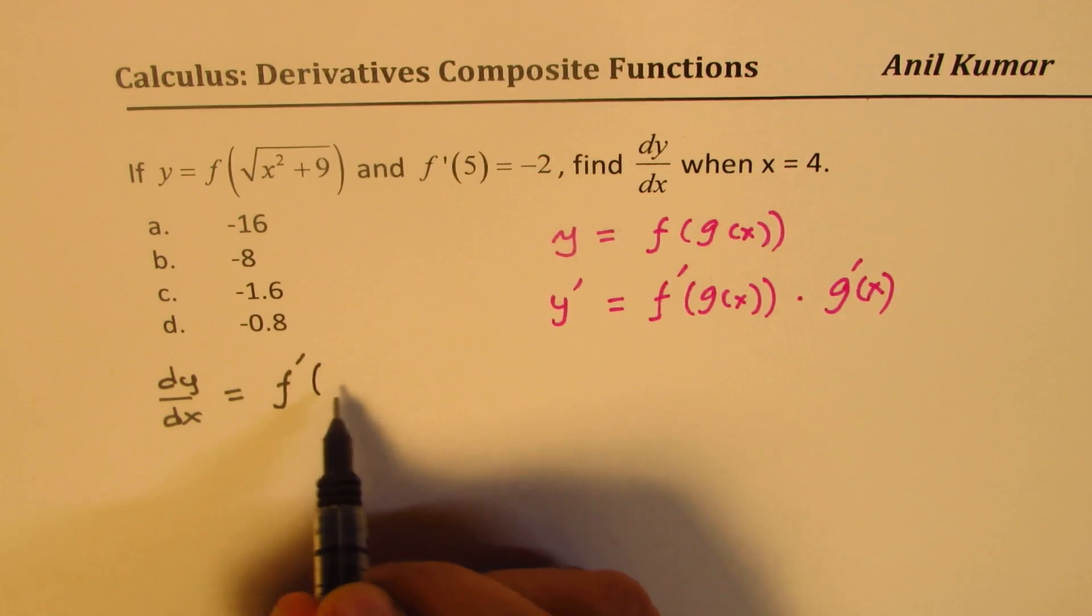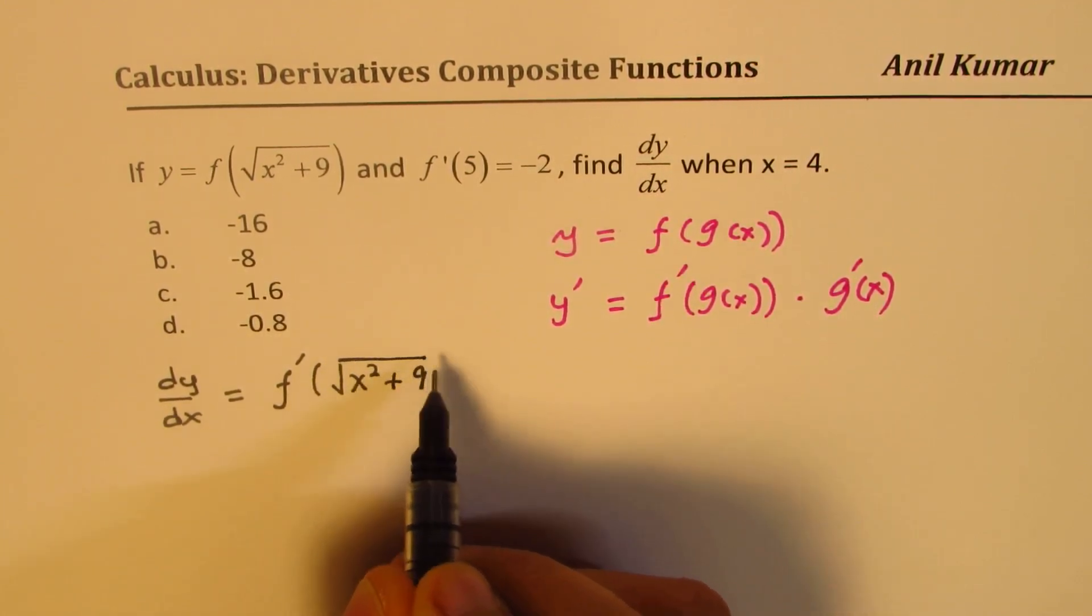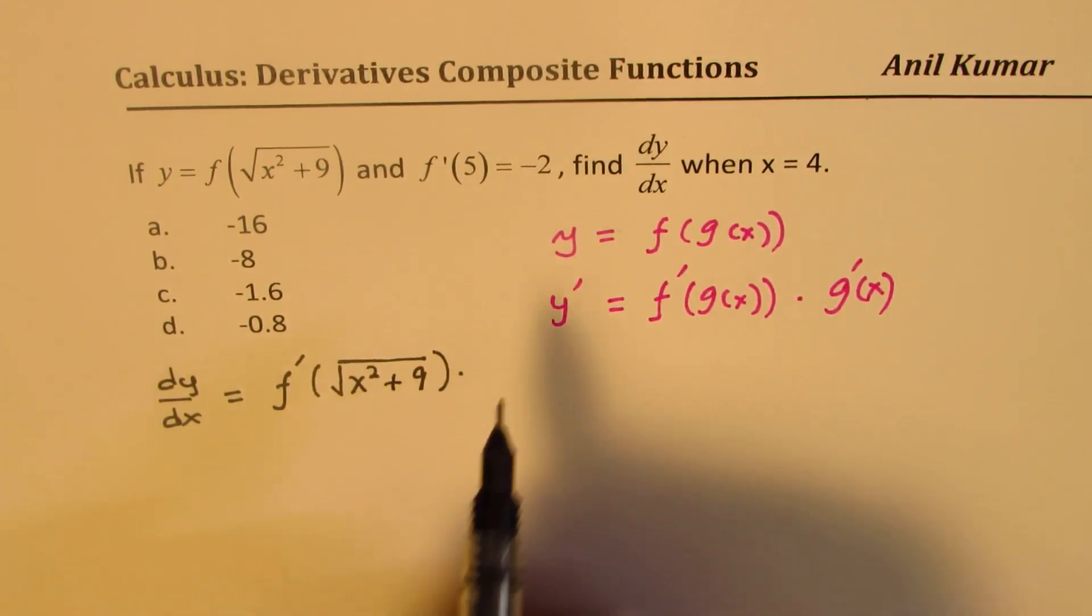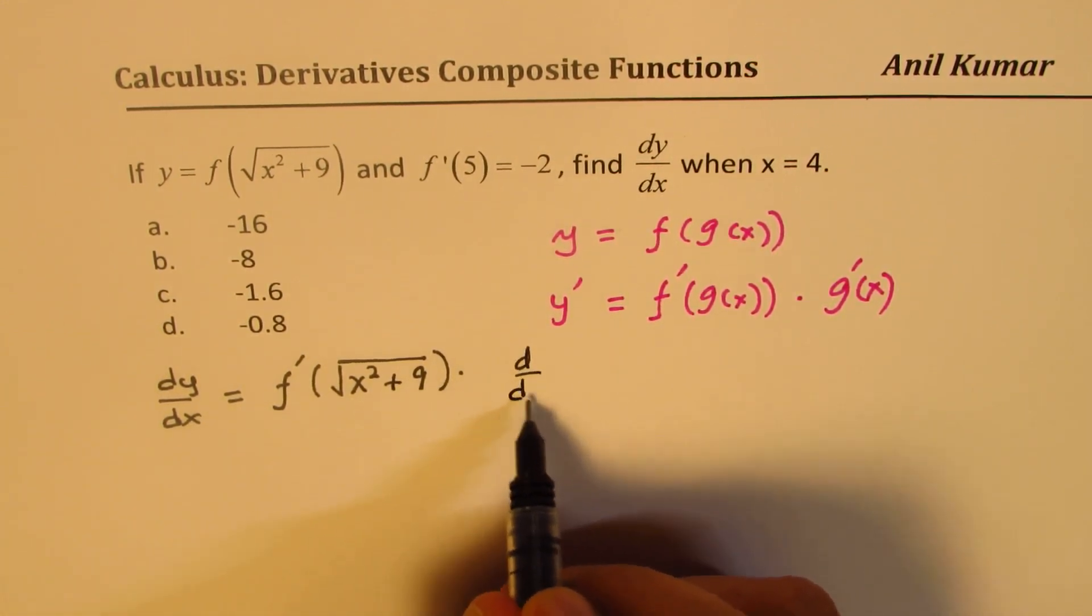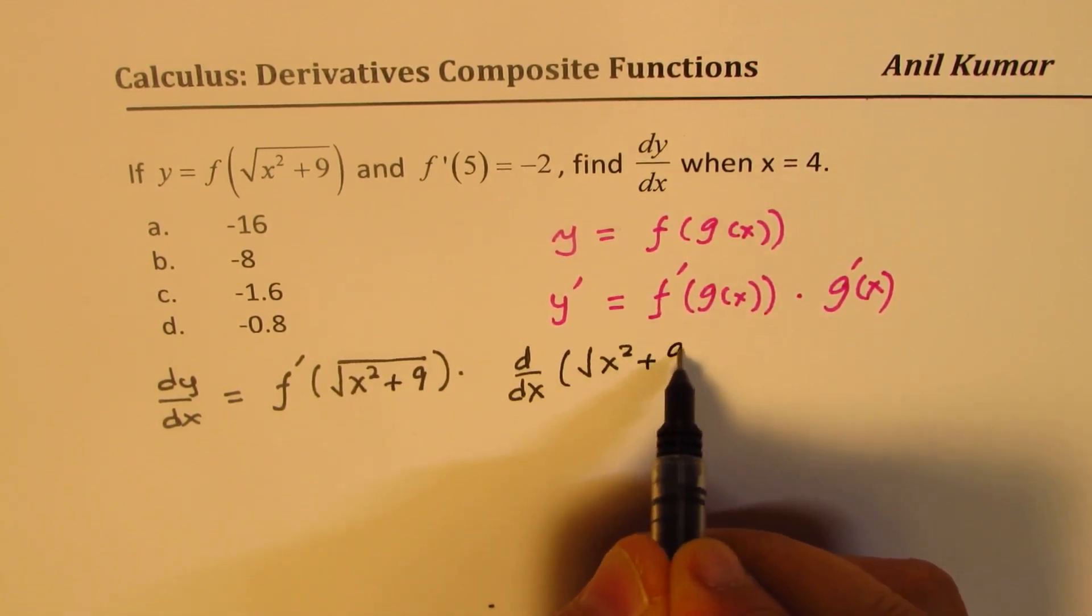We can write dy dx is equal to derivative of this function, which is f dash of square root of x squared plus 9 times derivative of inside function, which is d dx of square root of x squared plus 9.